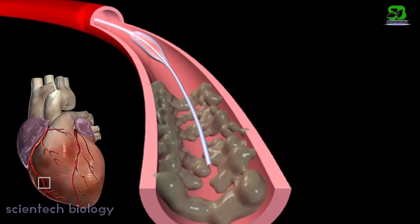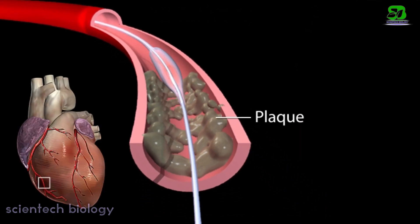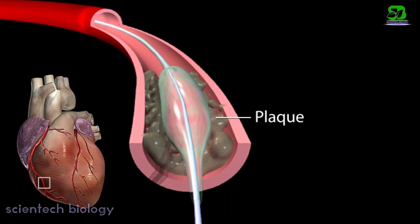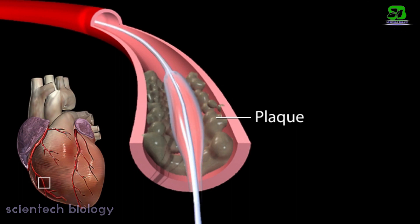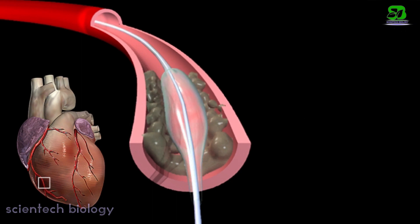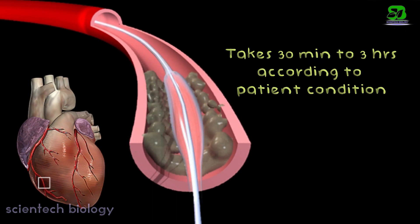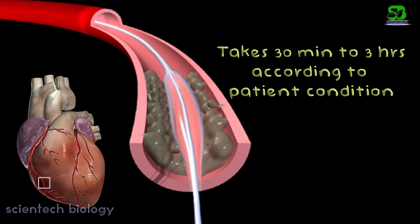In balloon angioplasty, a specially designed tiny balloon attached to the guide wire is inserted into the narrow section of the coronary artery to compress the plaque. This opens up the artery and allows free flow of blood. This procedure takes 30 minutes to 3 hours depending on the patient's medical condition.